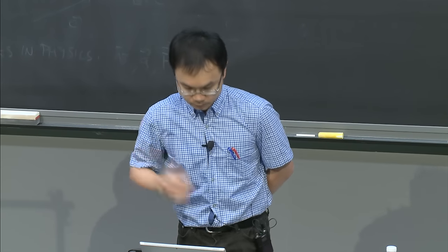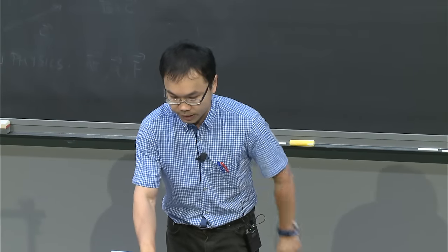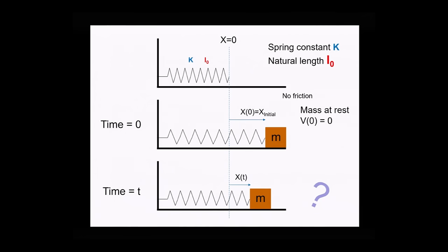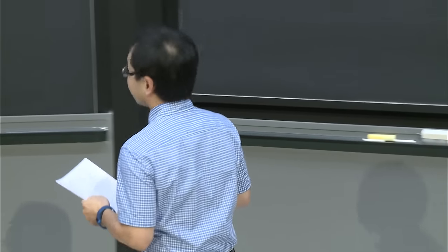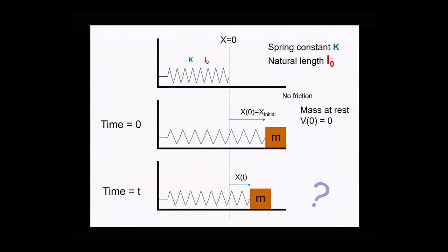Let's try it and see how we can make progress. The first thing is to define a coordinate system. I define a coordinate system in the horizontal direction — the x direction — where x equals 0 is the position where the spring is not stretched, at its natural length. Once I define this, I can express the initial position of the mass as x-initial. Also, since the mass is not moving initially, the velocity at t equals 0 is 0.